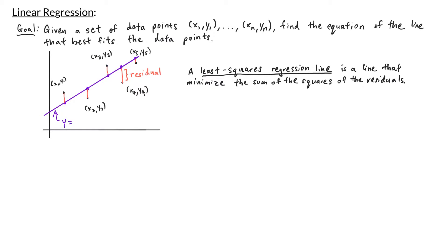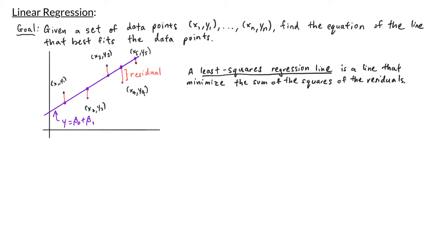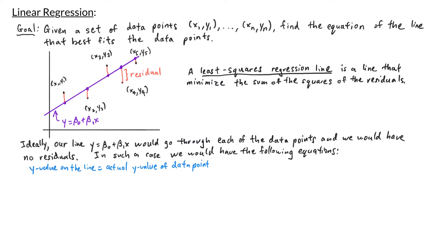Let's say that our line is defined by y equals beta-zero plus beta-one times x. In the best case scenario, we would have no residuals, meaning our line would go through each of our data points. In such a case, for each x value, we would want the corresponding y value on the line to equal the actual y value of the data point. So we have beta-zero plus beta-one times x1 equals y1, beta-zero plus beta-one times x2 equals y2, and continuing, beta-zero plus beta-one times xn equals yn. If we look carefully, this system of equations can be written in matrix form.